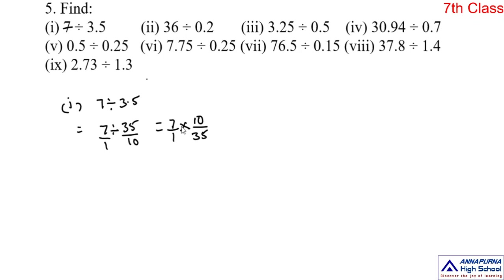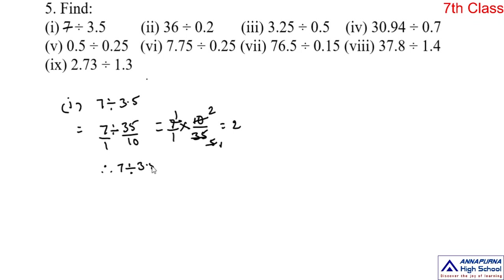So, 35 by 10 — its reciprocal is 10 by 35. Reciprocal means interchanging the numerator and denominator. Now we can cancel: the common factor is 7. We cancel 7 and 35 — 7 ones are 1, 7 fives are 5. In 10 and 5, the common factor is 5 — 5 twos are 10, so that becomes 2. Therefore, 7 divided by 3.5 is equal to 2.